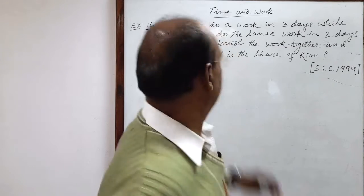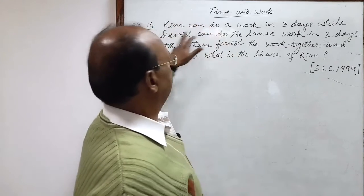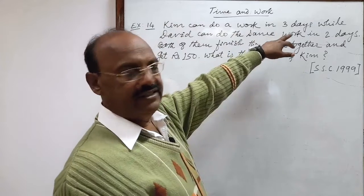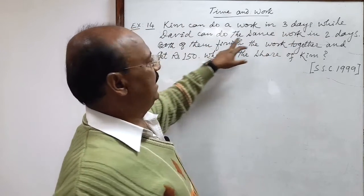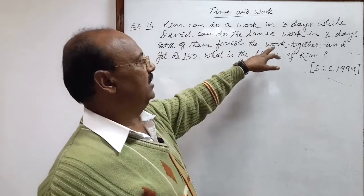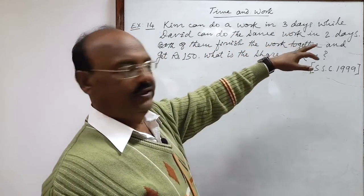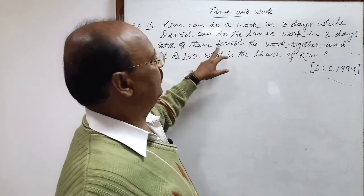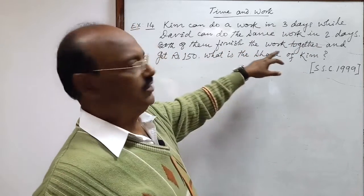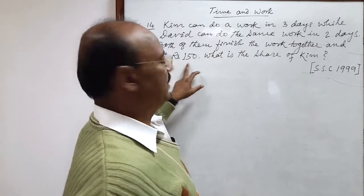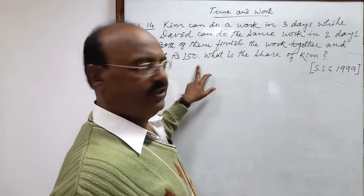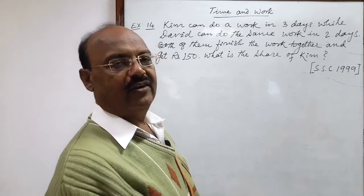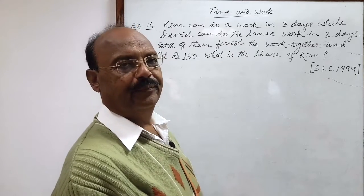Here the question is: Kim can do a work in three days, while David can do the same work in two days. Both of them finish the work together and get rupees 150. What is the share of Kim?